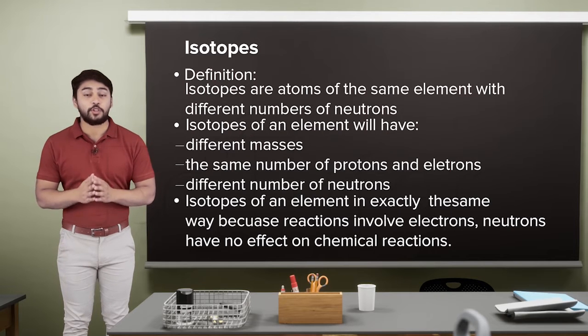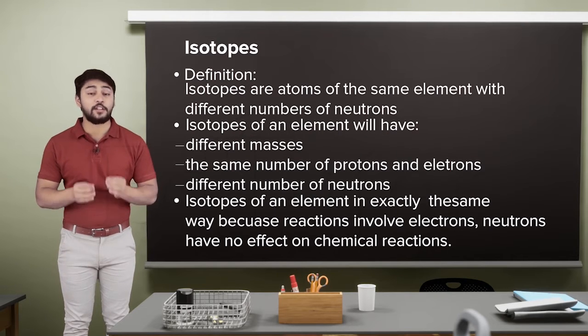This phenomenon was first discovered by the scientist Sodi. Here, a question arises: why is there a difference in mass if the atoms are of the same element? The difference in mass of isotopes is due to the difference in the number of neutrons. Isotopes have the same number of protons and electrons but a different number of neutrons.